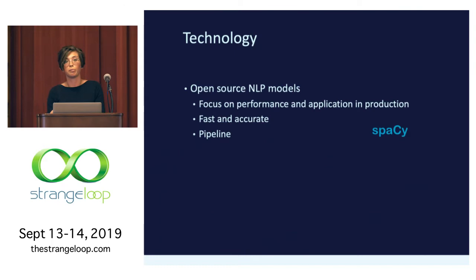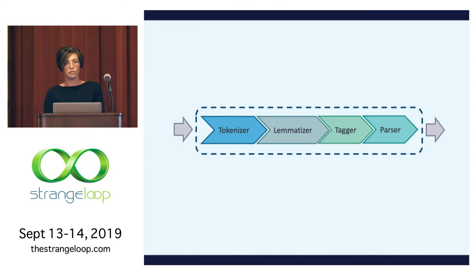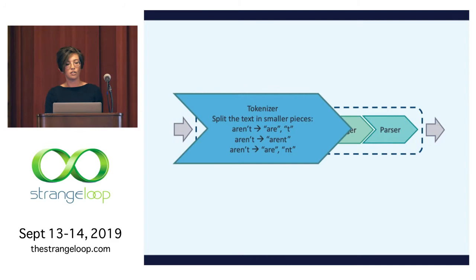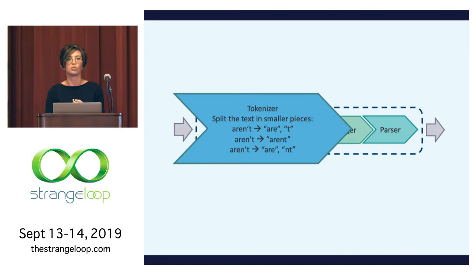I want to go over some of the modules of this NLP pipeline and why they're relevant to us. As the text comes in, the first thing we do is tokenize it — we take it and split it into smaller pieces. Depending on the language, this can be straightforward: eliminate spaces and punctuation. But for example, if you have a contraction or short form, you have to decide: do you want to split at the apostrophe, consider it a single token, or split it differently? So there's some decision making involved.